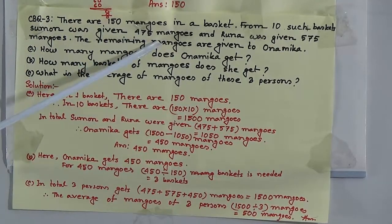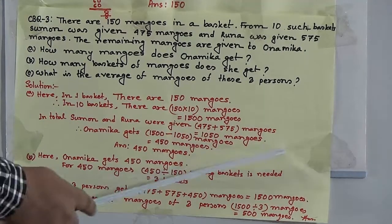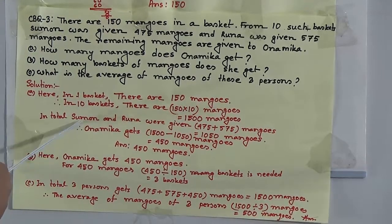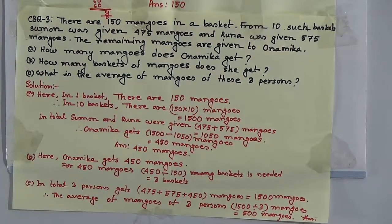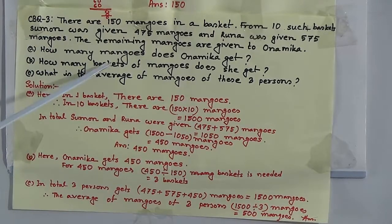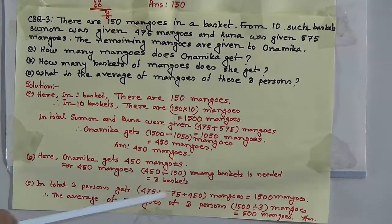Adding Shumon's 475 and Runa's 575 mangoes, we get 1050 mangoes. Subtracting the total mangoes of Shumon and Runa from the whole gives 450 mangoes, which is Onamika's share. Question B: how many baskets of mangoes does she get? We divide 450 by 150 and we get 3. So the amount of baskets is 3.